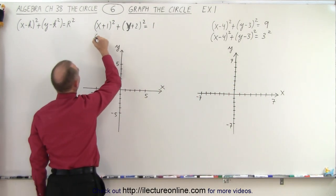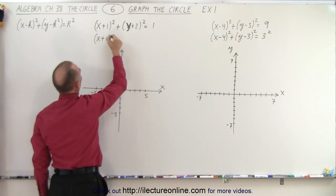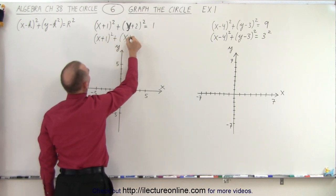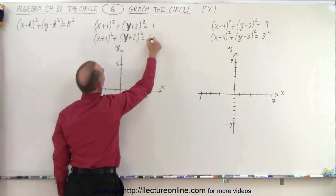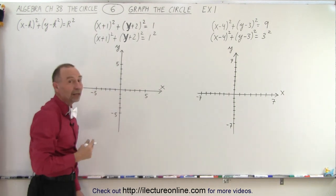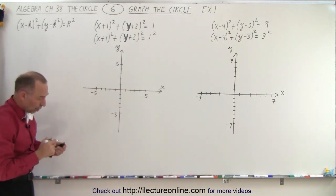And the same over here we can say that this can be written as (x + 1)² + (y + 2)² = 1². Again you can clearly then see that the radius is equal to 1.